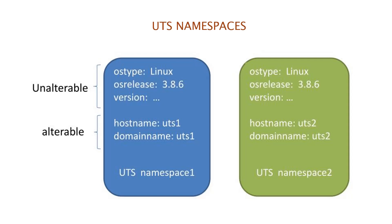UTS namespaces isolate two system identifiers: node name and domain name. In the context of containers, the UTS namespaces feature allows each container to have its own host name and NIS domain name. This can be useful for initialization and configuration scripts that tailor their actions based on these names. The name UTS is derived from Unix Time Sharing system. In this example, you can notice that two different namespaces have different host names and domain names, while the actual host name in the global namespace can be entirely a different one.